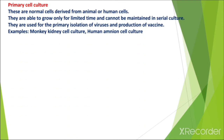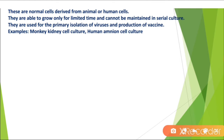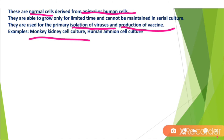Primary cell culture consists of normal cells derived from animals or human tissue. They are able to grow only for a limited time and cannot be maintained in serial culture. They are used for the primary isolation of viruses and production of vaccines. Examples include monkey kidney cell culture and human amnion cell culture.